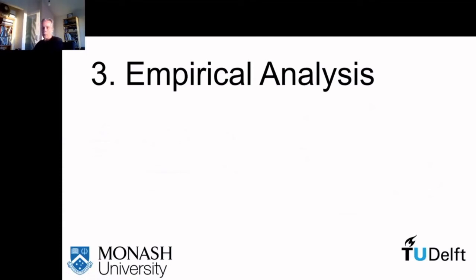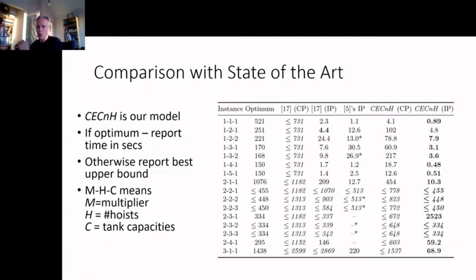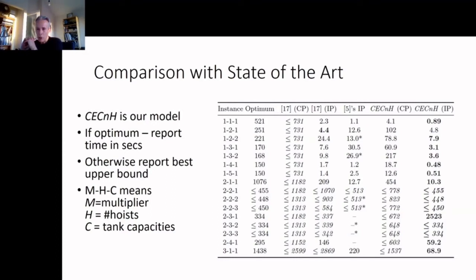We compared several variants of our approach with the best integer linear and best CP models. We took existing hoist scheduling benchmarks and scaled them up by factors of one to three, indicated by the M multiplier parameter. Within a one-hour timeout, we record the best solution found by each model, and if proven optimal, the time to prove optimality. We ran our CECNH model — Compact Model Extended with Capacities and Multiple Hoists — using MiniZinc mapped to CP solver Gecode and integer linear solver GUROBI. Our model mapped to GUROBI dominates the other models in terms of performance.